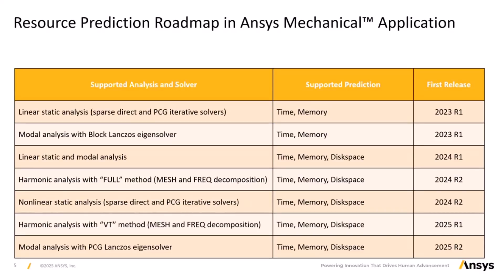2024 R2 included support extended to harmonic analysis using the full method, supporting both mesh and frequency decomposition. This release also introduced predictions for non-linear static analysis. And 2025 R1 extended support to harmonic analysis using the VT method. Now, in the upcoming release 2025 R2, support has been added for modal analysis using the PCG Lanczos eigensolver.